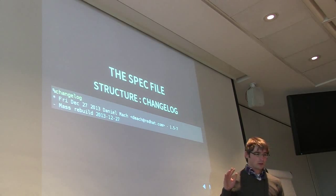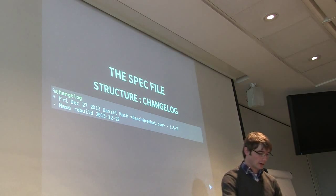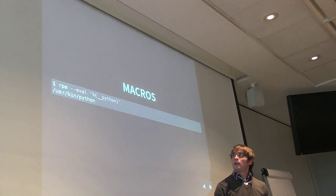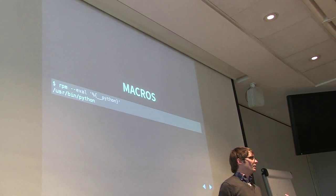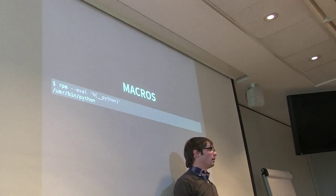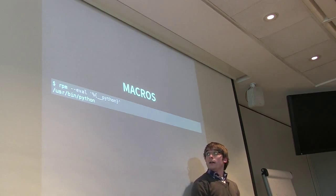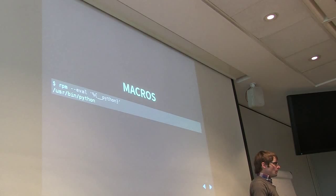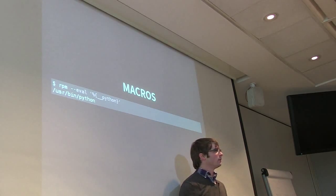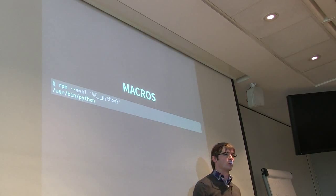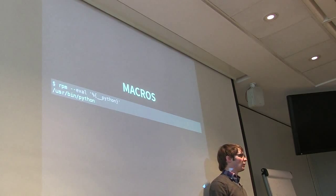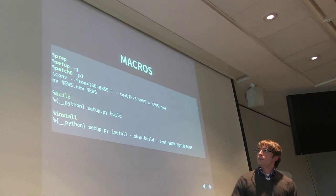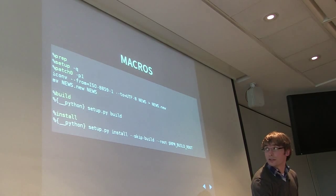When going through the spec file we saw a lot of things that were abstracted away from us - those were macros. In the install step, for example, we had this double-underscore python thing. What that does is it allows some flexibility in the distribution and the build tools in order to define these. If you're digging through a spec file and need to know what's going on, you can pass it to rpm --eval and it's going to tell you what it is on your current system. This was our build and install step, which is essentially the same as this.